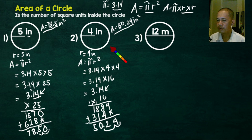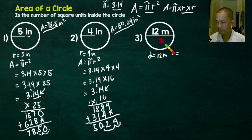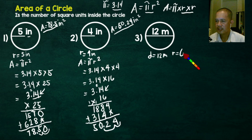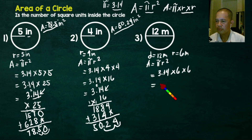For number 3, the given is a diameter — we have a 12-meter diameter. We're not going to use the diameter directly; we're going to get the radius. The radius is half of the diameter, so half of 12 is 6. So the radius is 6 meters. We write the formula: area is equal to pi r squared, with pi equal to 3.14, multiplied by radius 6, times 6. So we write 3.14, and 6 times 6 gives us 36.